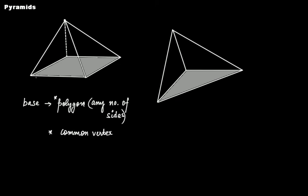Here the base is a square. From each side of this square base, you have a triangular face — from the front, the back, the right side, and the left side — and all the triangular faces are meeting at a common vertex. That common vertex makes it a pyramid. This is actually a square pyramid, because its base is a square.